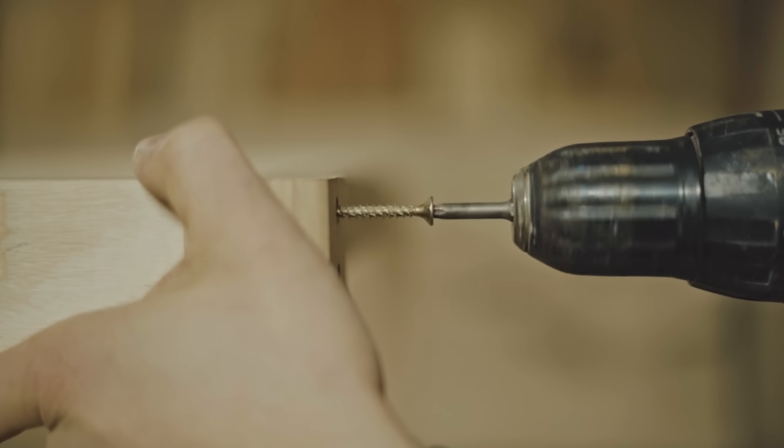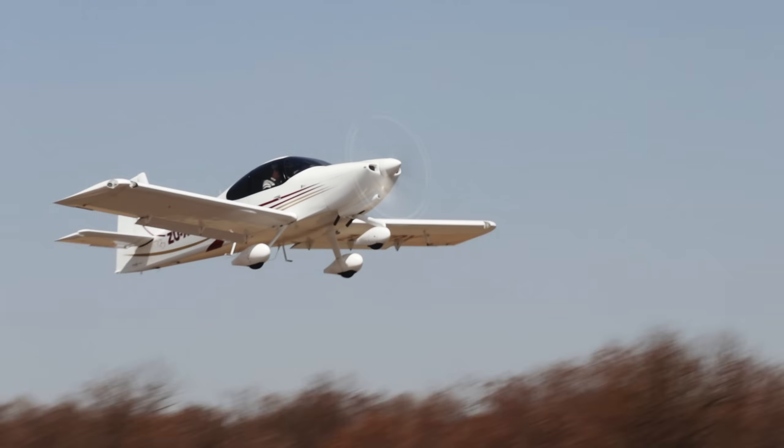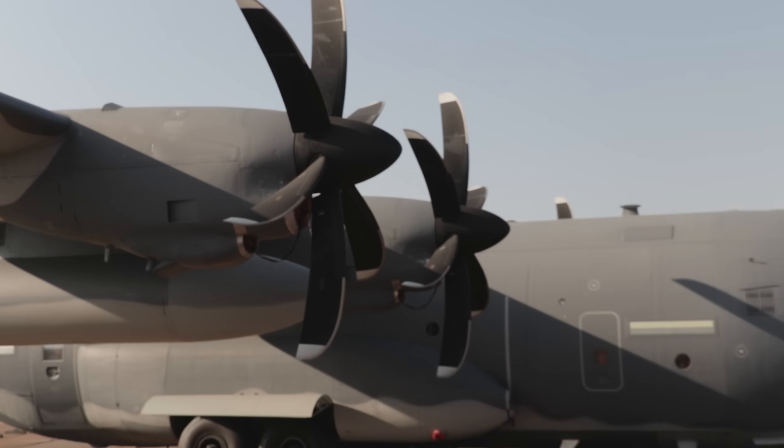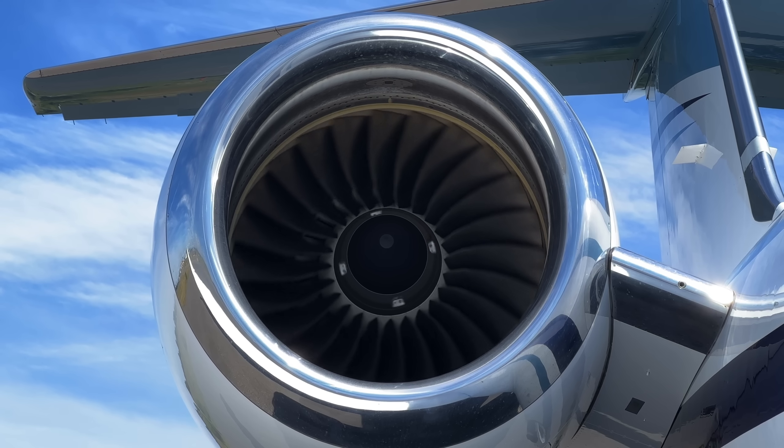Does a propeller pull itself through the air like a screw pulls itself into wood, or does it push itself forward by blowing air backward? Why do some aircraft use propellers and others use fans? And why are fans placed in a duct but not propellers? These are some of the questions we'll answer in this video by exploring the differences between propellers and fans.